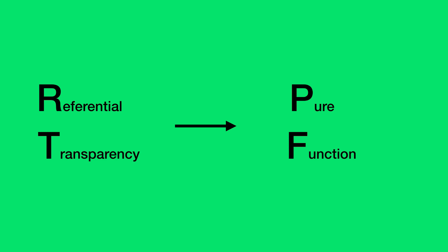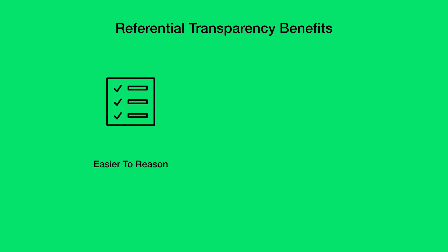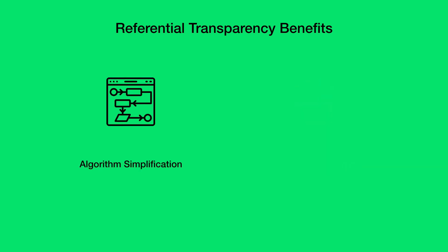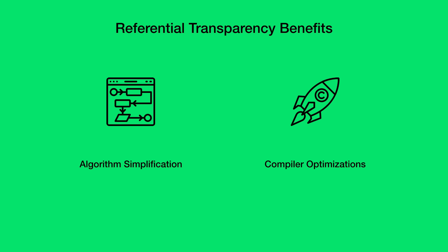So what's the benefit of referential transparency? Why is it important? There are many benefits. First, it allows the developer and the compiler to reason about the program behavior. Second, it helps in proving the correctness of the program. Third, it helps in simplifying the algorithm or modifying it. And finally, it provides the opportunity for the compiler to perform optimizations such as memoization, lazy evaluation, and parallelization.